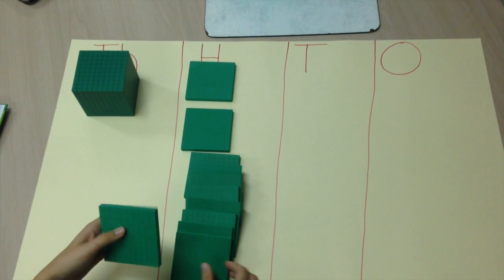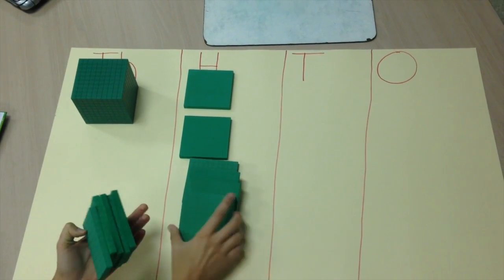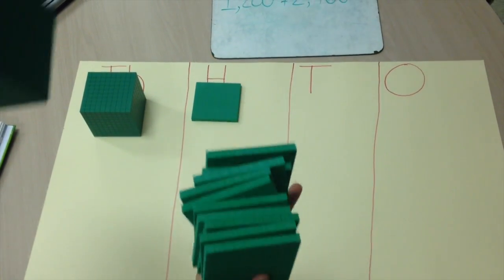So I'm going to take 10 hundreds: one, two, three, four, five, six, seven, eight, nine, ten, and regroup it for a thousand.